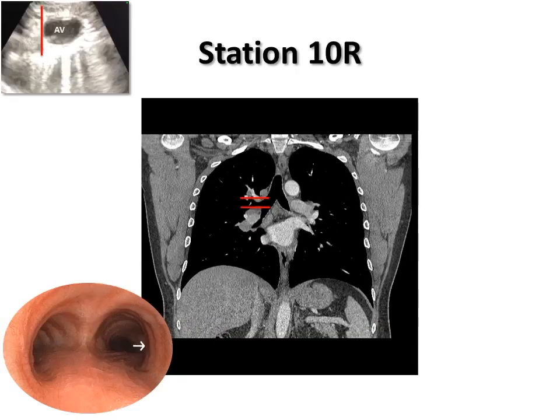Station 10R refers to lymph nodes located along the right main stem bronchus. The upper border is the lower rim of the azygous vein on the right, and the lower border is the interlobar region. The lower border of station 4R and the upper border of station 10R are both defined by the lower rim of the azygous vein.